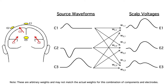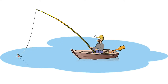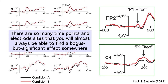A lot of ERP studies are fishing expeditions. The researchers just want to see what happens when they use a given task or manipulation. But if they don't have specific predictions, then they're probably going to look at the data before they decide what time windows and electrode sites to use. And that's a recipe for bogus but statistically significant effects.